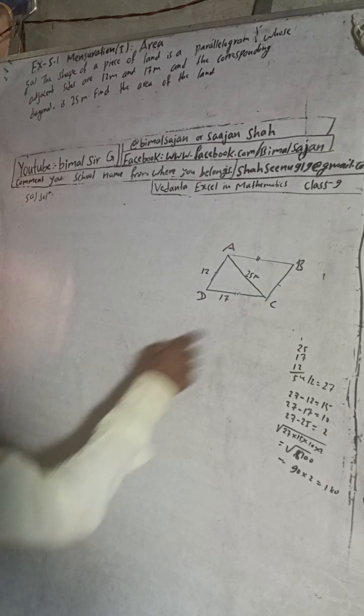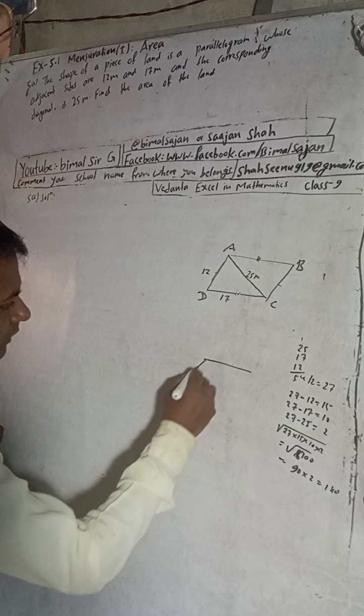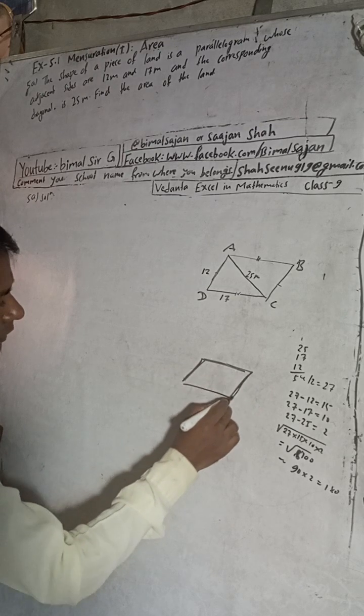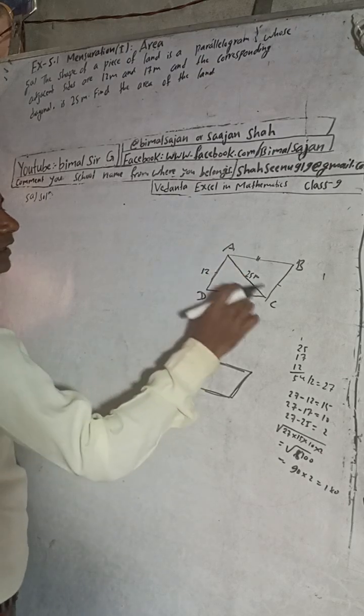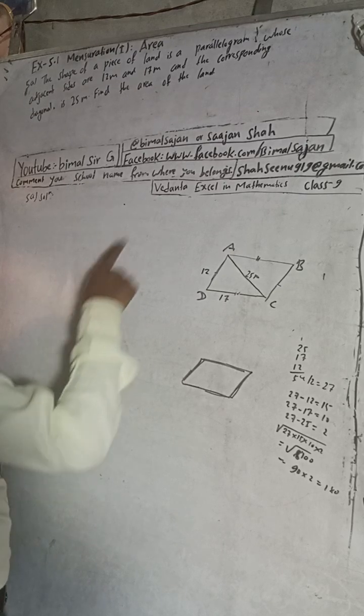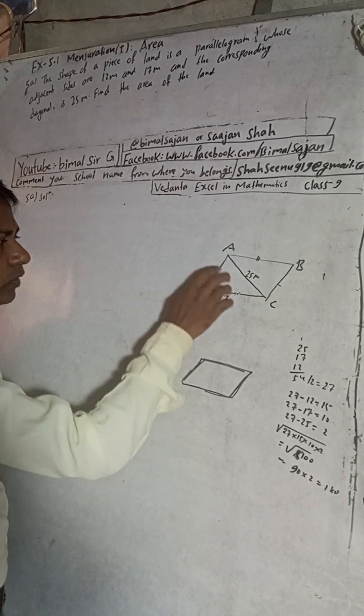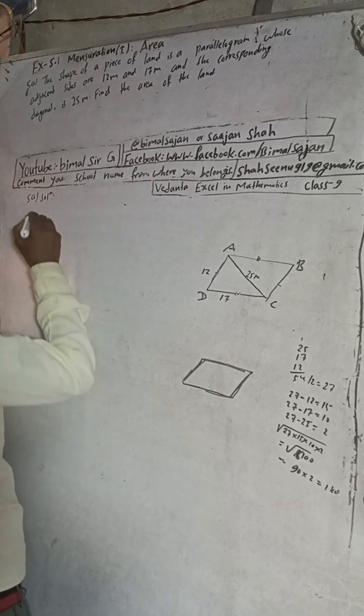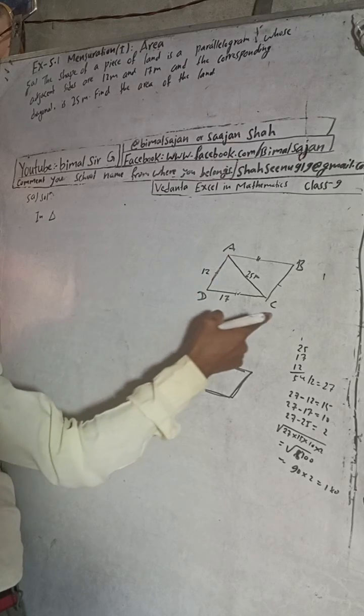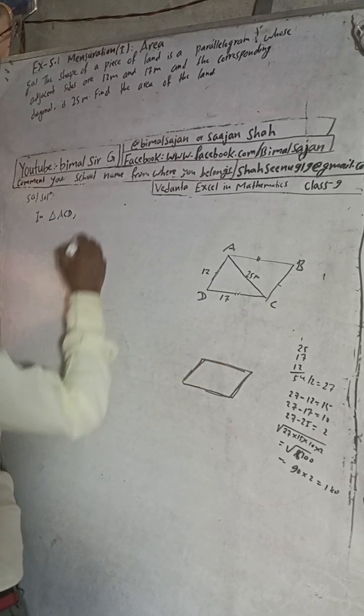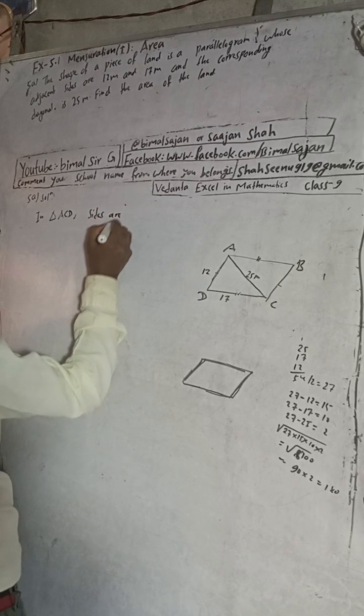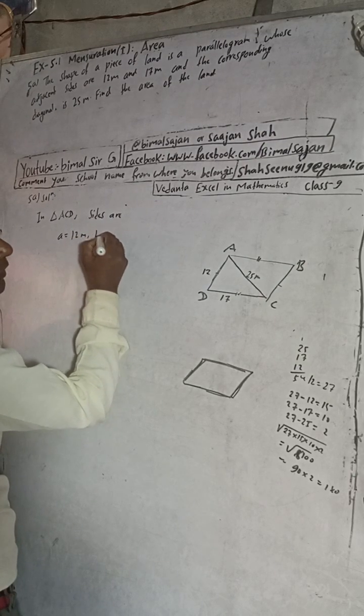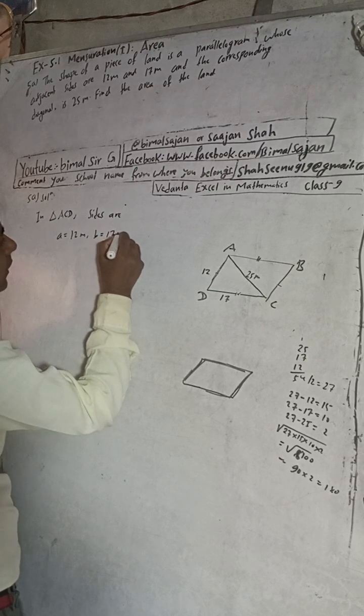Adjacent side means these two, or this and this. I will take this adjacent side 12 and 17 and the corresponding diagonal. The corresponding diagonal is related with these two adjacent sides. So this is the diagonal. Now in triangle ACD, sides are: A is equal to 12 meter, B is equal to 17 meter, and C is equal to 25 meter.